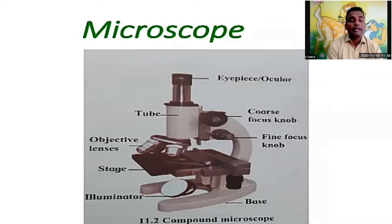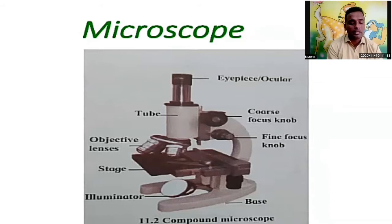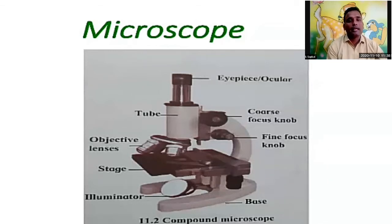He saw a thin section of cork under the microscope and used the name 'cells' for the smallest particle. The word 'cell' derives from Latin, meaning 'a small room.' On the screen you can see a microscope — it has an eyepiece and tubes.